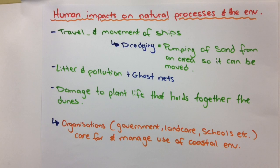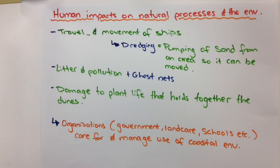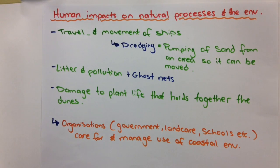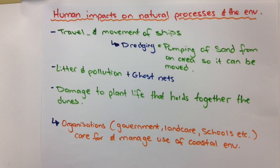Travel and movement of ships is important for countries like Australia, but large ships need to travel through a deep enough channel. The process of longshore drift, erosion, and deposition can mean sand builds up in these channels where ships want to pass. There's a process called dredging, which pumps sand from those areas and transports it to sites where sand can be replenished, allowing ships to move in and out.